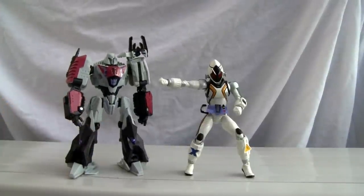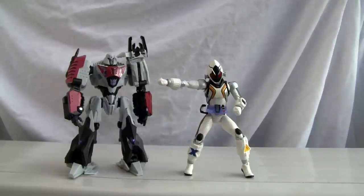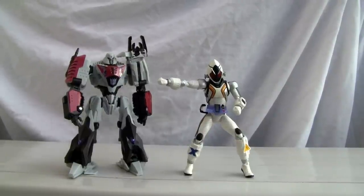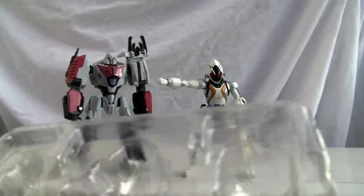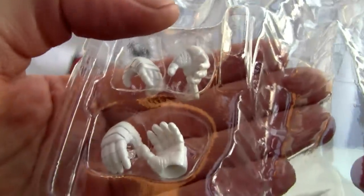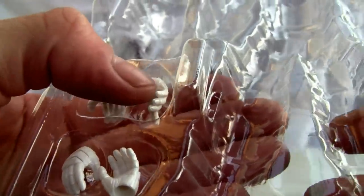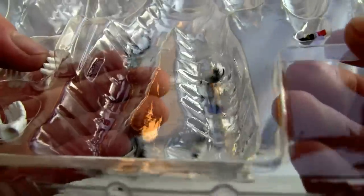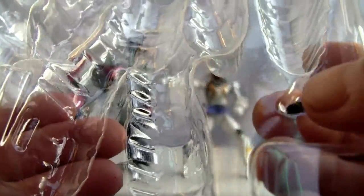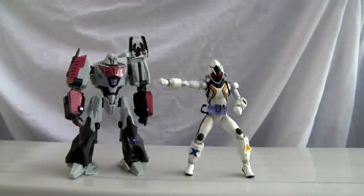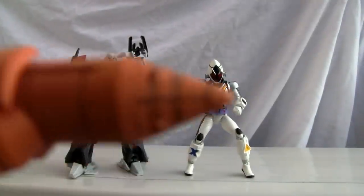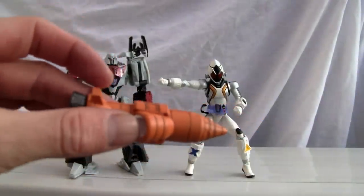I forgot to mention two little extras that come with it. Does come with another pair of hands, two pairs, one open grip hands and the splayed open hands. And it does come with a little tiny extra astro switch. So those are the extras aside from the drill module and the little rocket module.